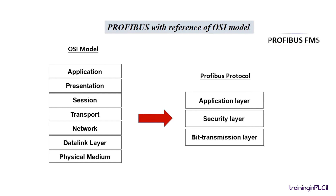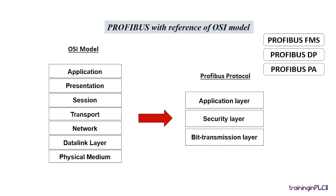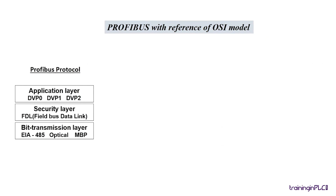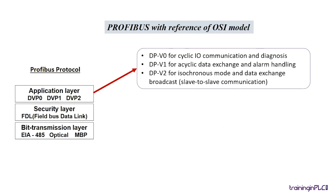The three PROFIBUS versions FMS, DP, and PA all use a standard bus access protocol. The application layer determines the three different DP protocol functions: DPV0 for the cyclic I/O communication and diagnosis, DPV1 for acyclic data exchange and alarm handling, and DPV2 for the slave-to-slave communication.